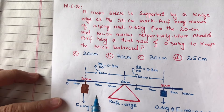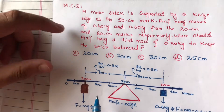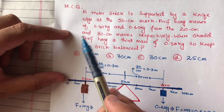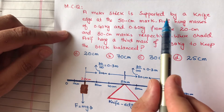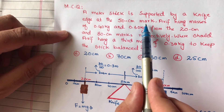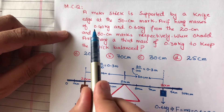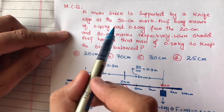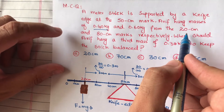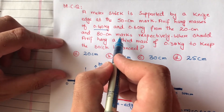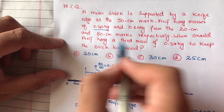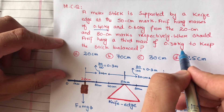Hello friends, this is Mohammad Abdullah and you are watching my YouTube channel Teacher Abdullah. Today's question: a meter stick is supported by a knife edge at the 50 centimeter mark. If hung masses of 0.4 kilogram and 0.6 kilogram from the 20 centimeter and 80 centimeter marks respectively, where should a third mass of 0.3 kilogram be hung to keep the stick balanced?